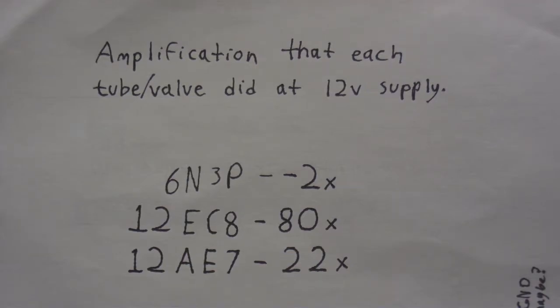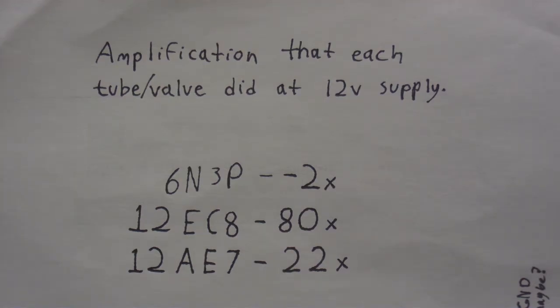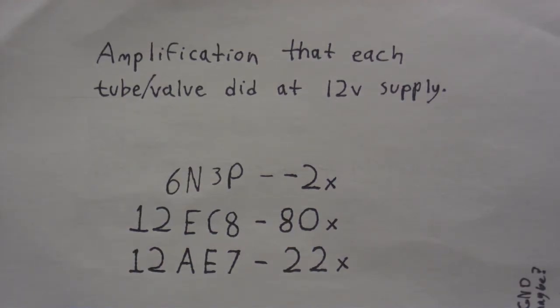Here are the test results from the three amplifier circuits that I built. Each tube at 12 volts: the 6N3P gave us no amplification, in fact it cut the voltage in half. The 12A7 did much better, we got 22 times amplification. But the winner overall is the 12EC8 with a whopping 80 times amplification. So what I'm going to do is build up that little preamp again, connect it to a microphone, and we'll see how well it works.